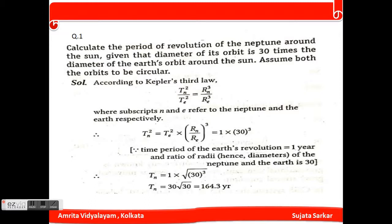According to Kepler's third law, we know that T_n squared divided by T_e squared for Neptune's time period equals R_n cubed divided by R_e cubed.